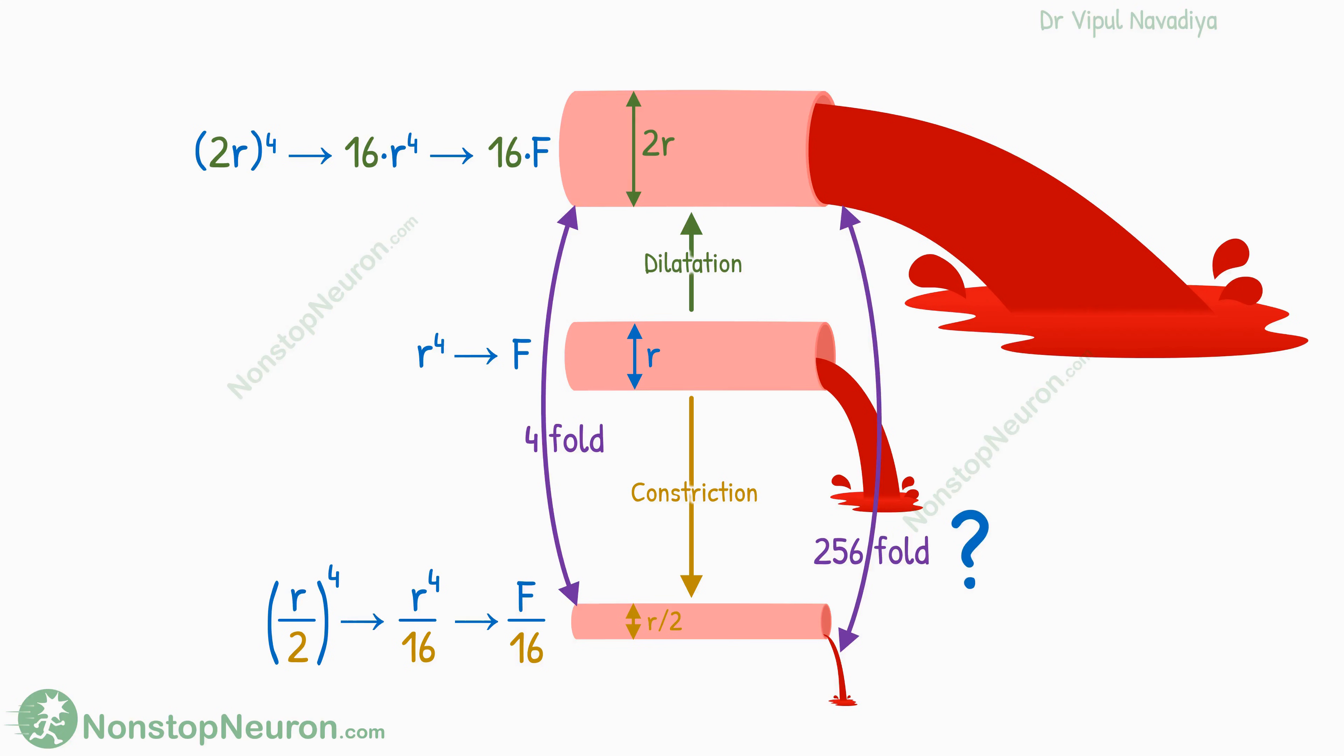The cross-section area of the vessel is pi r squared. So with an increase in radius, the space that blood gets to pass through increases by the square function.